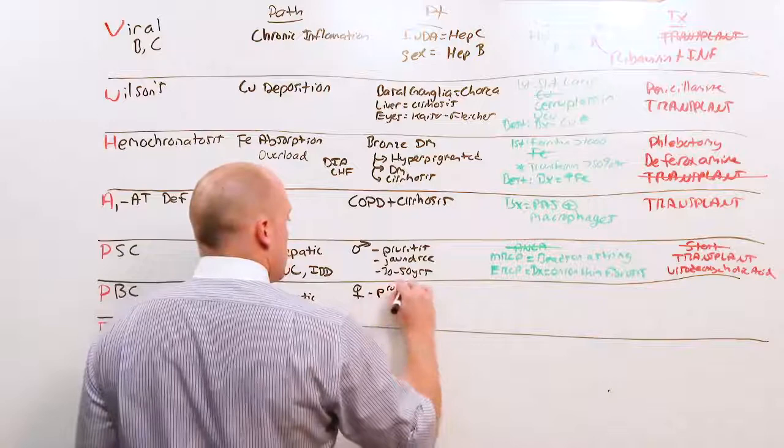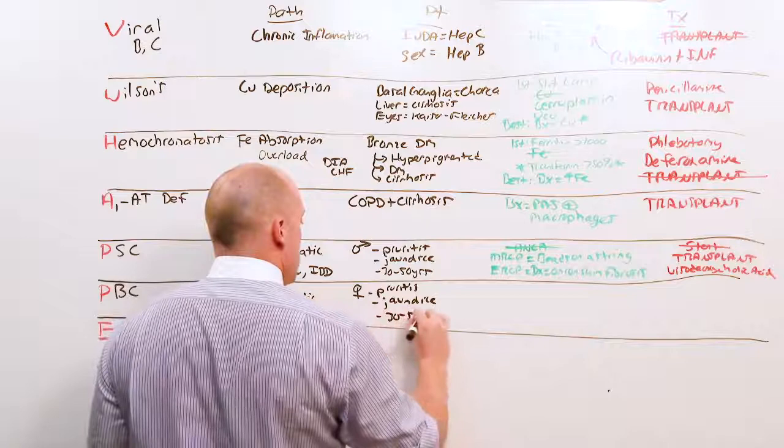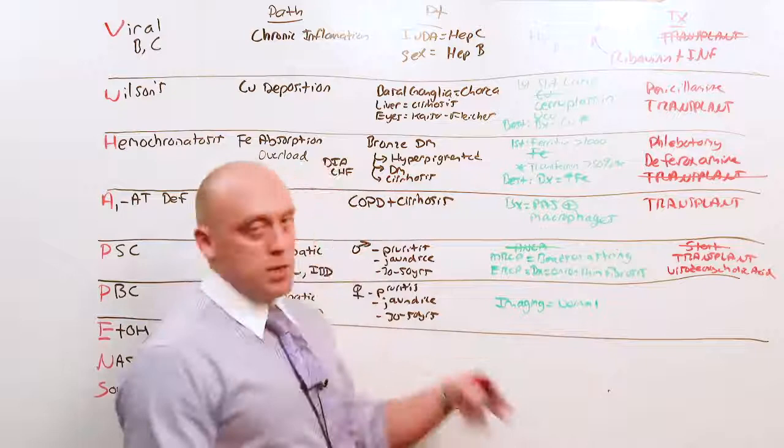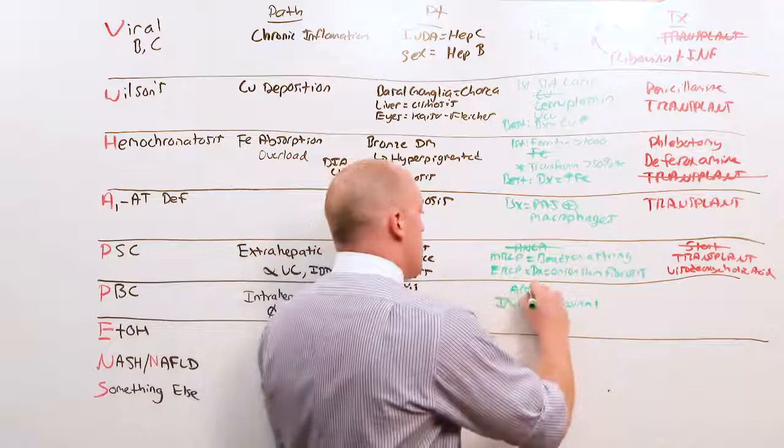These women are going to present with pruritus, jaundice, and between 30 and 50 years old. You are going to get imaging. And the imaging is going to be normal. No ducts will be dilated. There won't be beads on the string. Nothing will be positive.